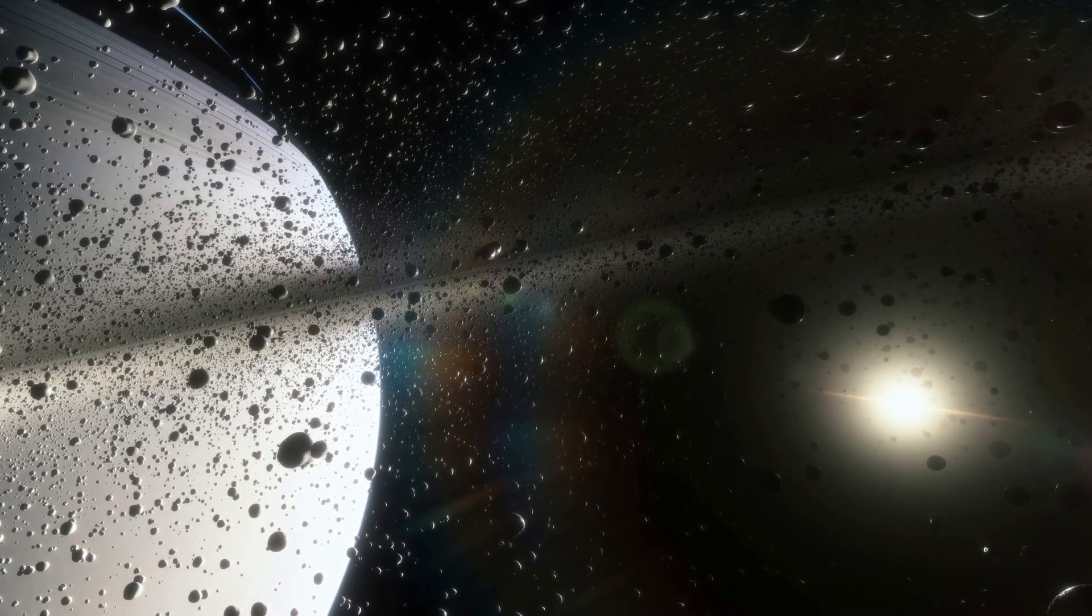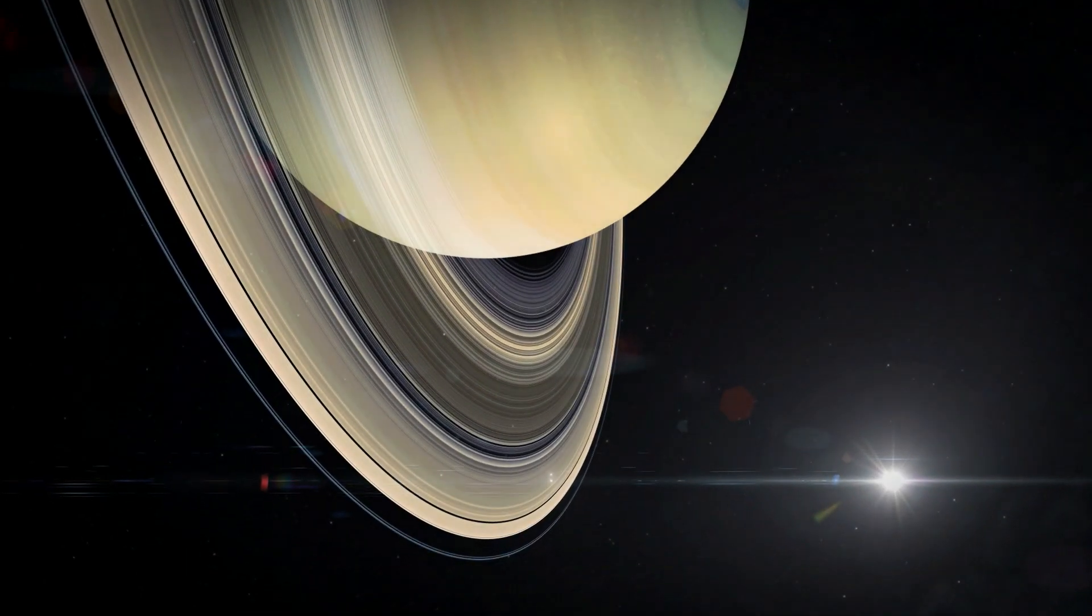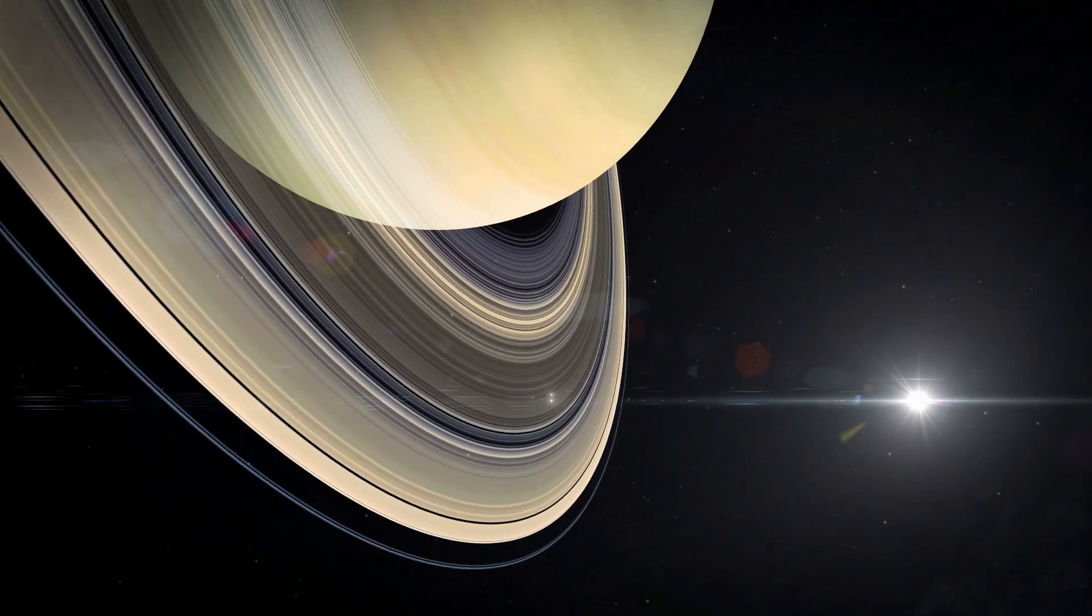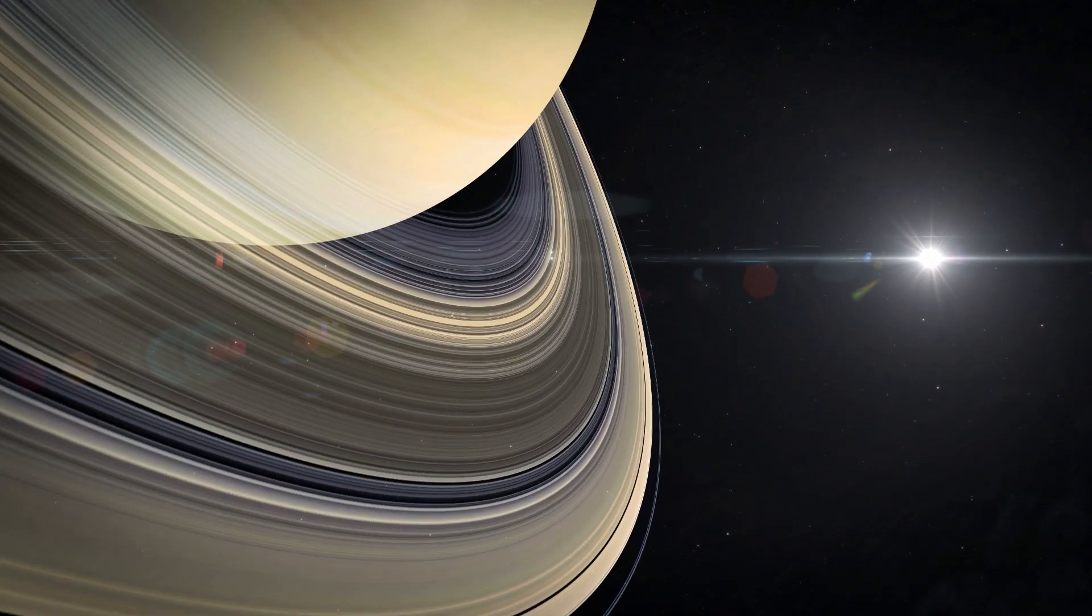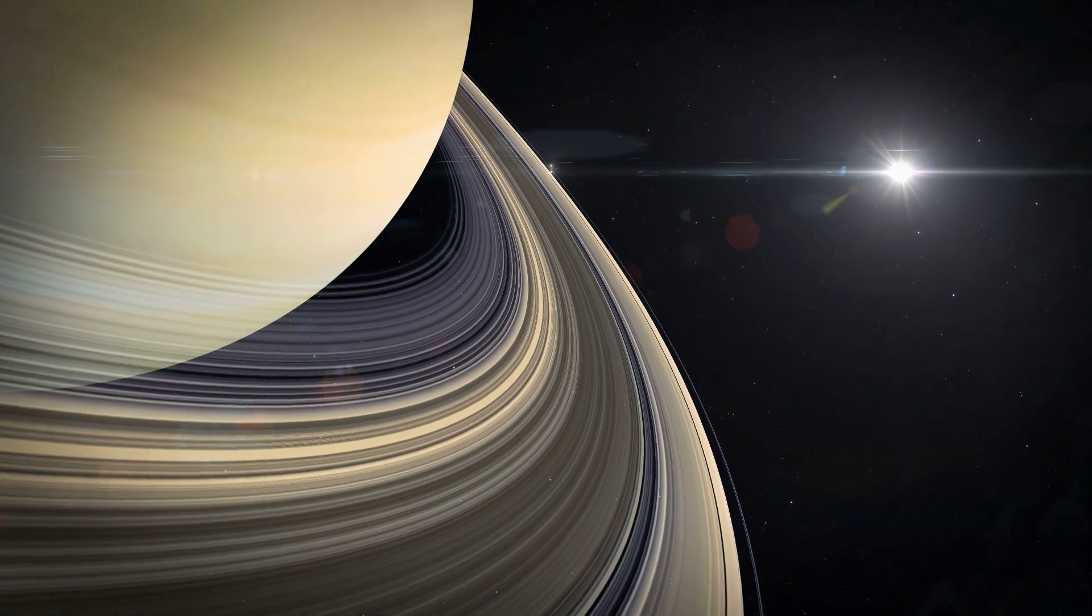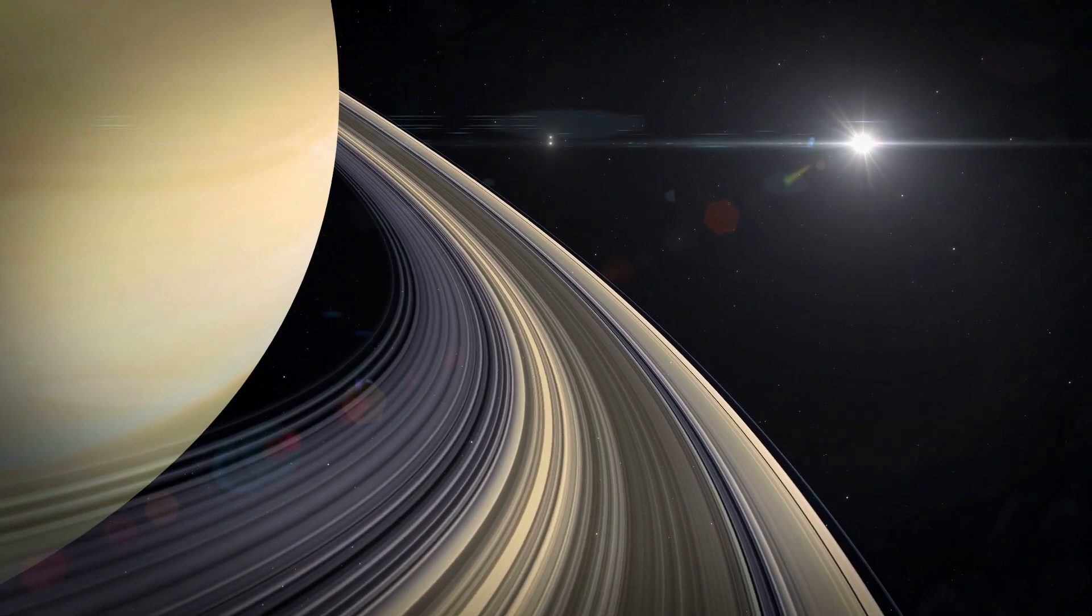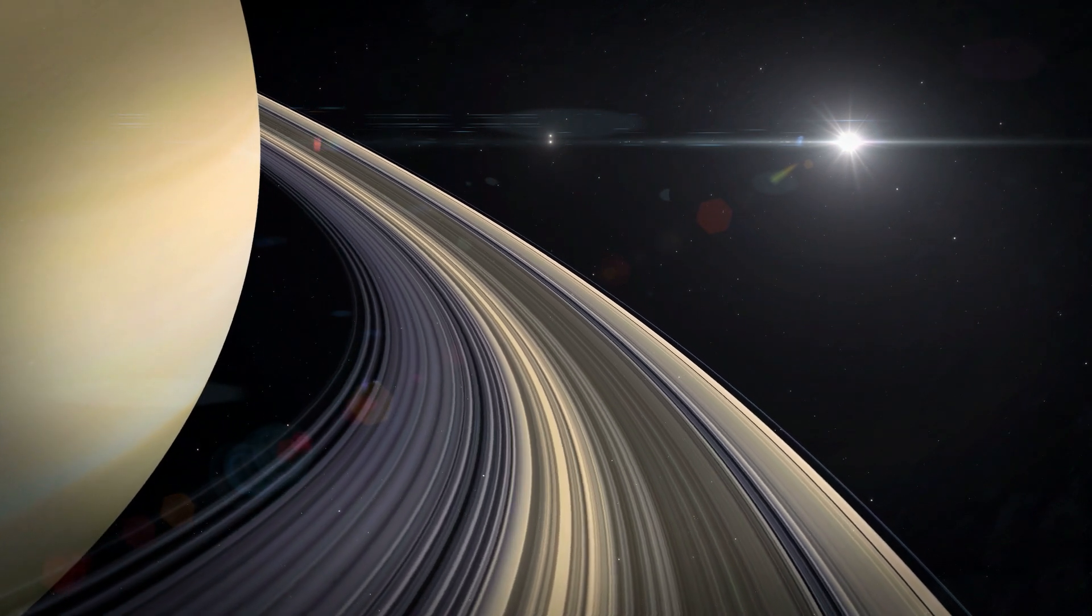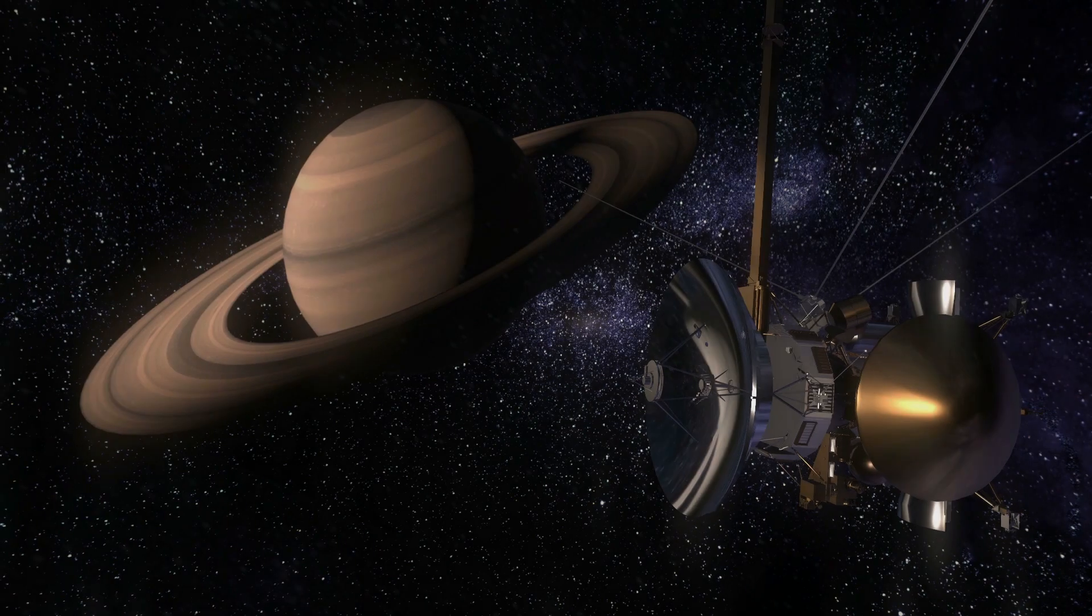The rings extend from Saturn 175,000 miles, however the vertical height of the rings is only around 30 feet in the main rings. Interestingly, each ring, of which there are seven main ones, orbit the planet at different speeds.